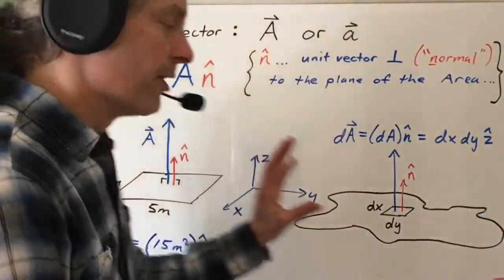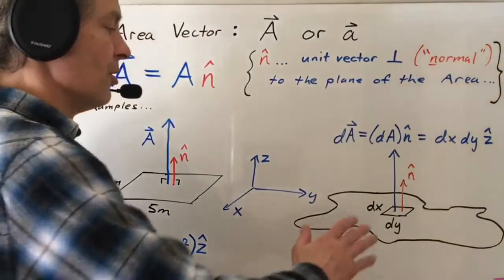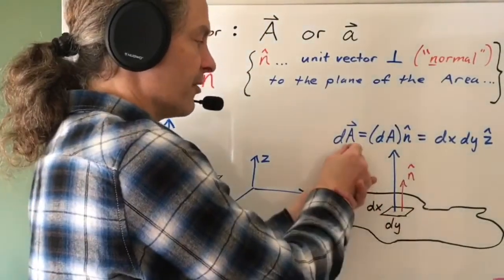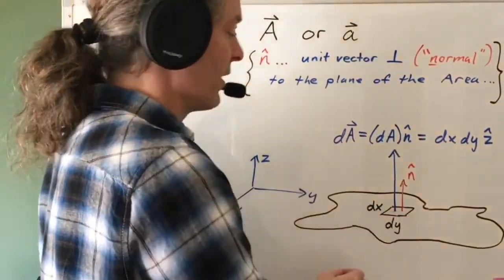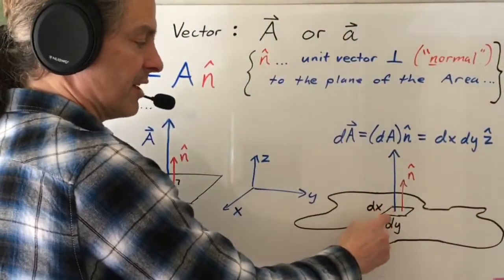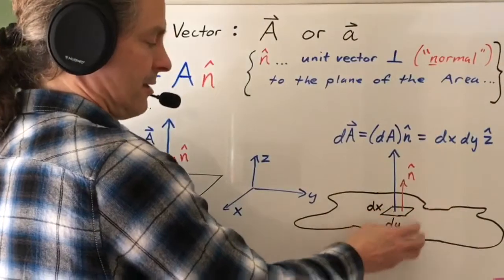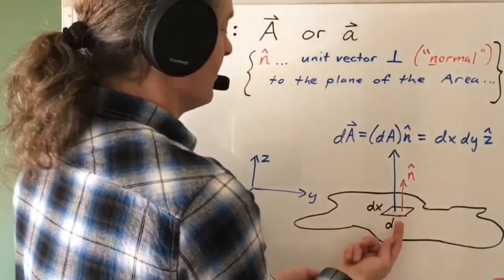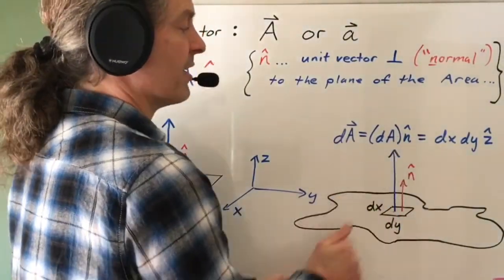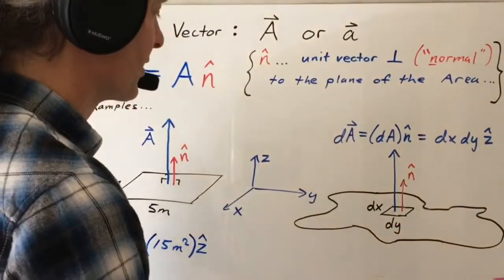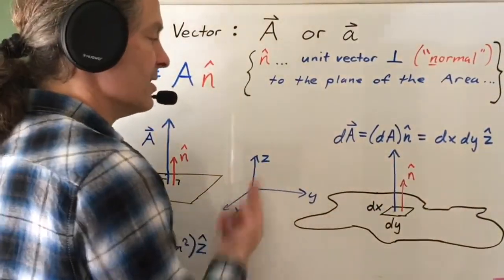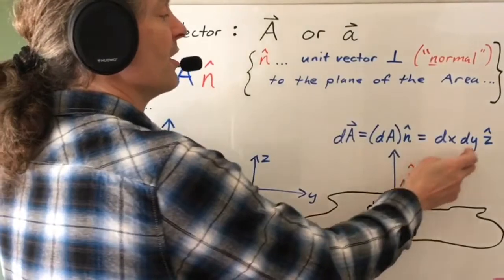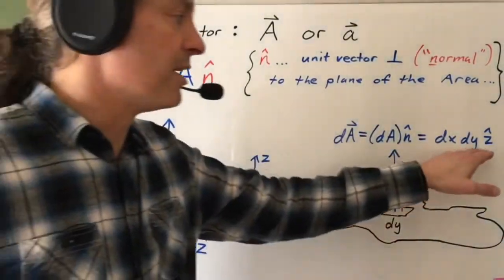We can also have a differential version of this concept. Imagine I've got some area in the xy plane and I want to take a little chunk of that. I can define a little differential area vector for a little chunk of area. I've got a little bitty dx, a little bitty dy. My area vector magnitude would just be dx dy. The direction would still be perpendicular to the plane of that area, which in this case is the z-hat direction. So the differential area vector for this little dx dy element would be dx dy z-hat. And again, I could have had a negative z-hat if I wanted.